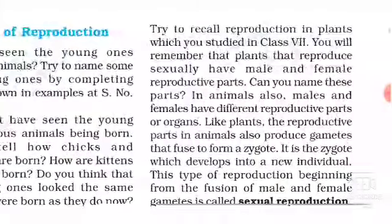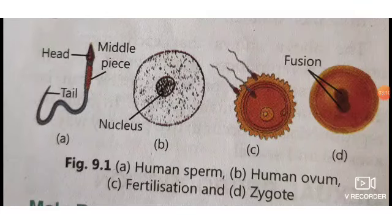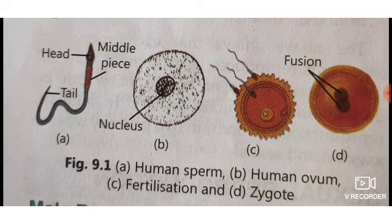When we talk about sexual reproduction: when a male gamete and a female gamete come together to form a new cell, it is called a zygote, and this zygote then grows and develops to form a new individual. Male gametes are called sperm and female gametes are called ovum.